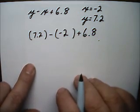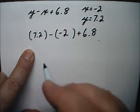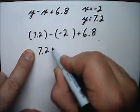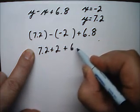If you do this you won't make mistakes. Minus a minus is the same thing as a plus. So we end up with 7.2 plus 2 plus 6.8.